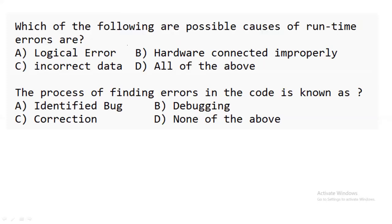The next question: which of the following are possible causes of runtime errors — logical error, hardware connected improperly, or incorrect data? Runtime errors can be caused by any of these, so 'all of the above' is the correct answer. The process of finding errors in code is known as debugging.